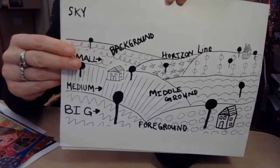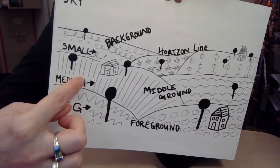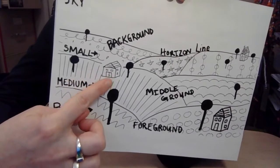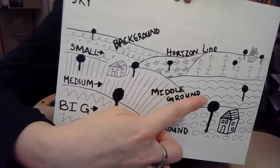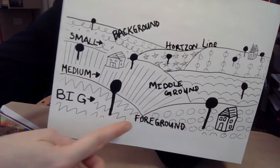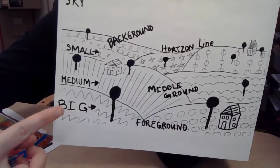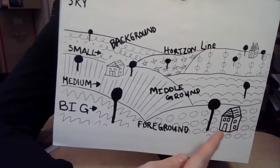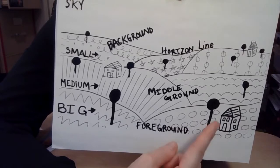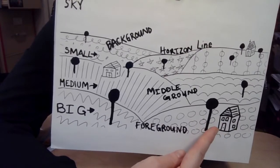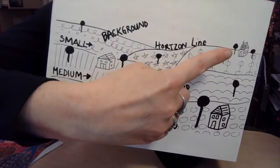You have a middle ground — that's where the stuff is medium. Your houses are a little bit bigger than in the background, and your trees are a little bit bigger too. And then you're going to have a foreground. The foreground is where the stuff is in the front and it's big — it's the stuff closest to you. If you're standing outside looking at the nearest house, it's very large, but way back on a mountain it's going to look very small.